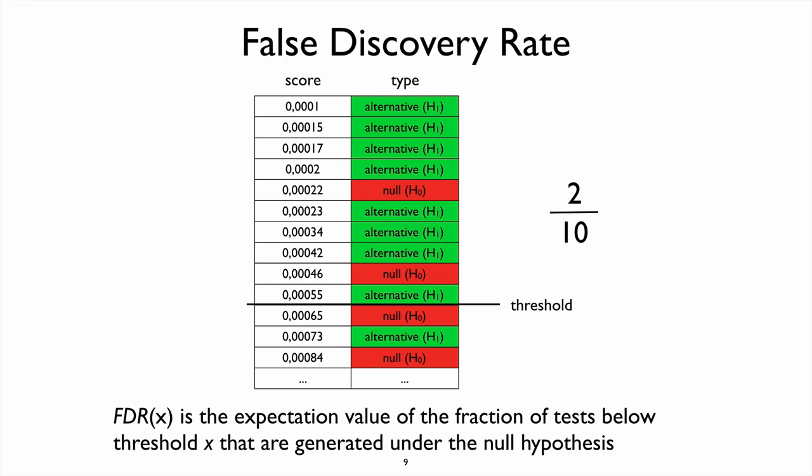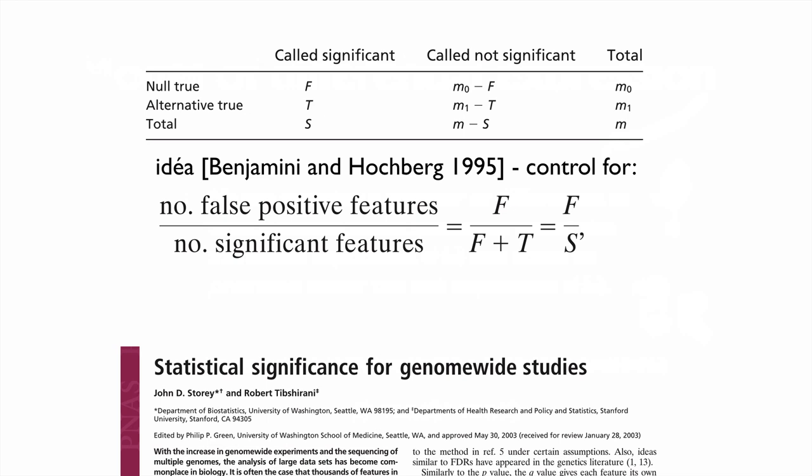In practice, we never know which ones, which are actual null hypothesis, which are alternative ones, which statistics generated which. This is just a statistical argument. So instead we need to have a way to estimate the fraction of a hypothesis that are incorrect. This could be calculated by procedure given in this paper on statistical significance in genome-wide studies by Storey and Rob Tibshirani. And this is an idea where the authors try to control for what's known as a false discovery rate, namely the number of false positive features divided by the number of significant features. And this is something that they taken from Benjamini Hochberg since 95.